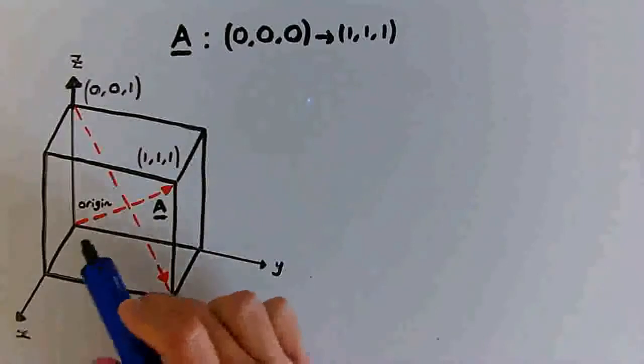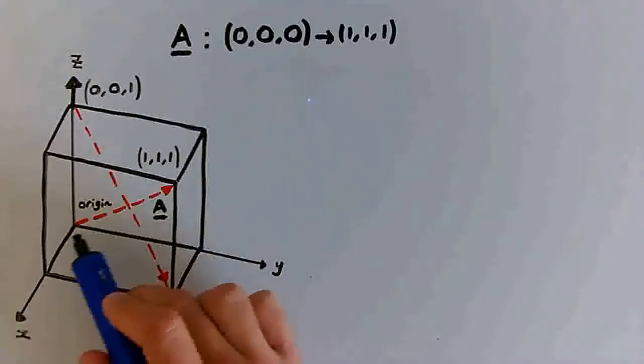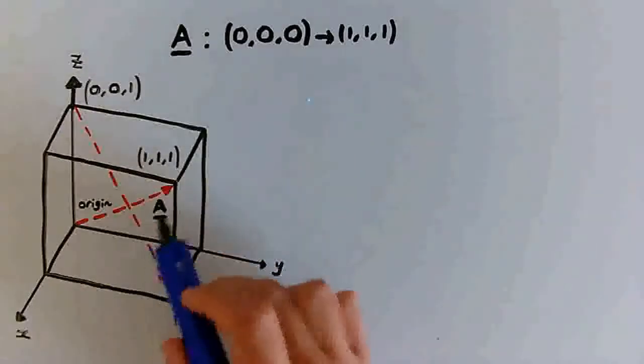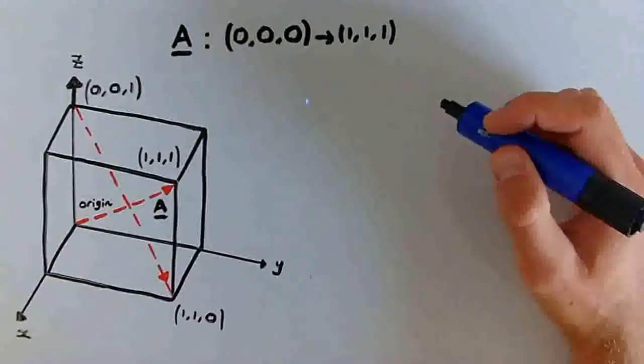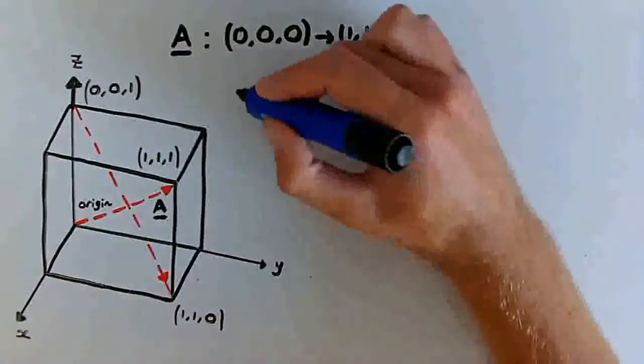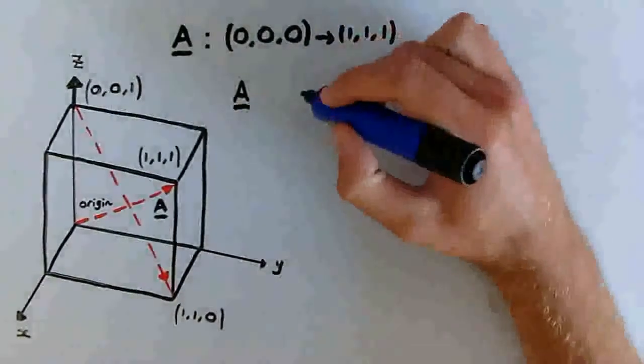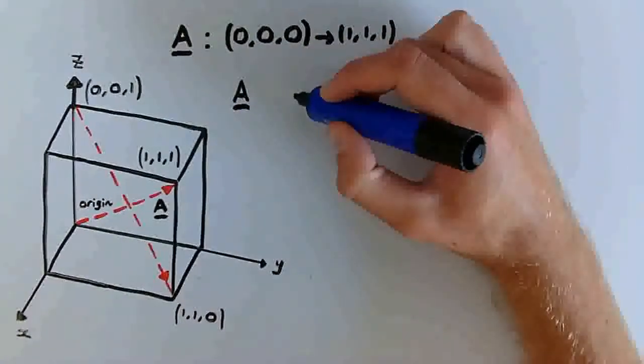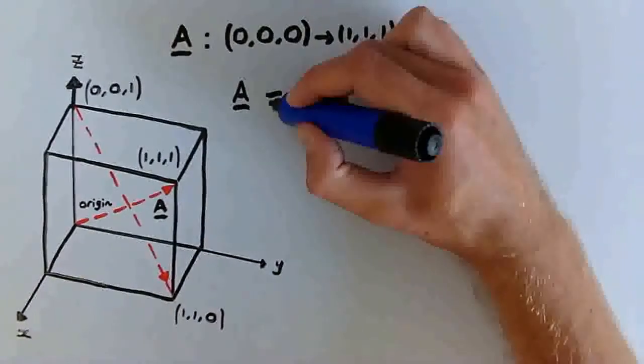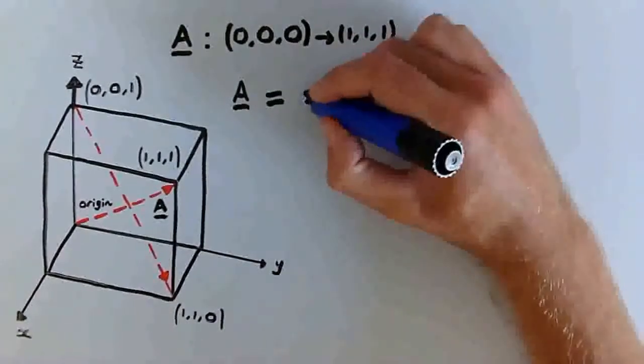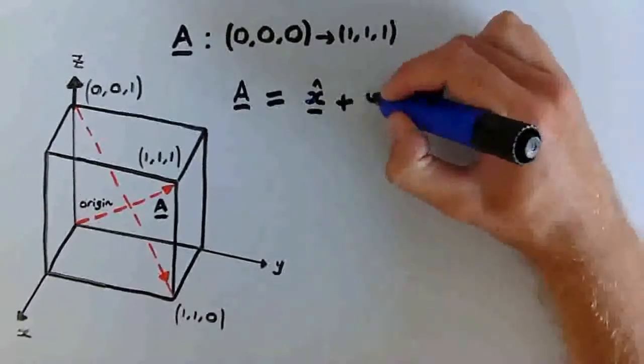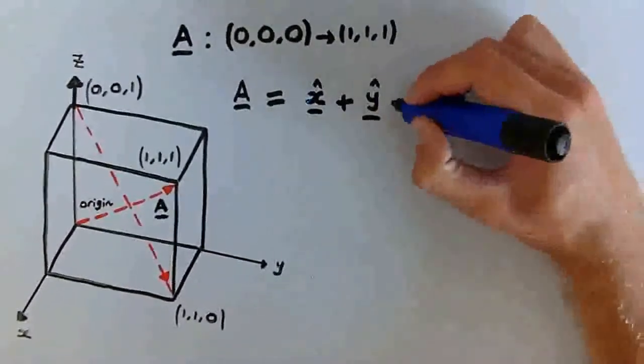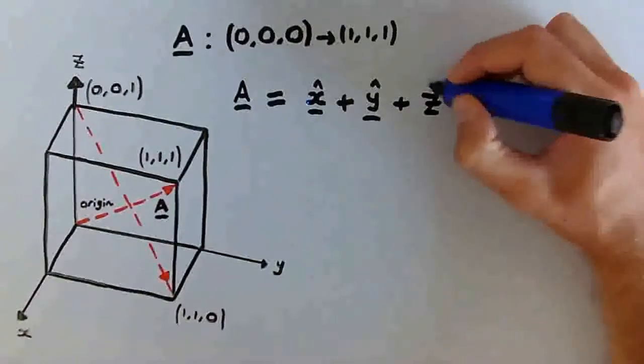We've labelled one of the body diagonal vectors that travels from the origin to the point 1, 1, 1 as A, and if we want to write A as a vector, we would write it using Cartesian basis unit vectors as x hat plus y hat plus z hat.